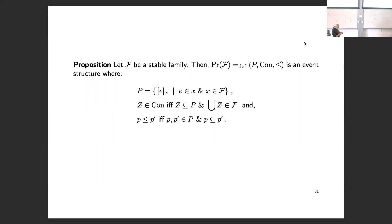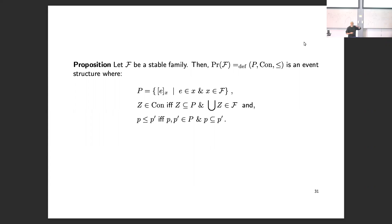We construct an event structure from a stable family by rechristening events: for every configuration and every event within it, we look at the smallest way that event can occur — the event together with its minimal causes within that configuration — and regard that as the new event. Consistency is then: these configurations are compatible in the stable family (there's a bigger one), and causal dependency is given by inclusion.